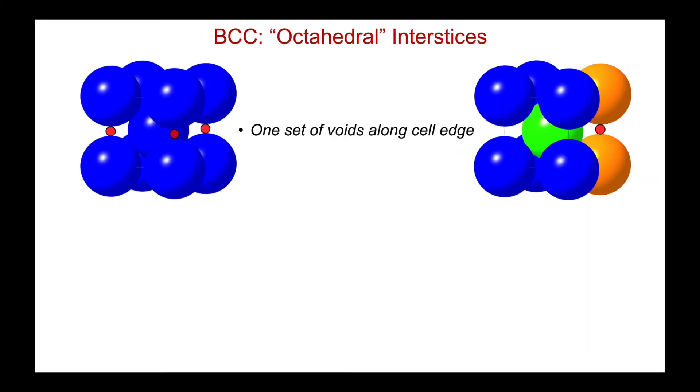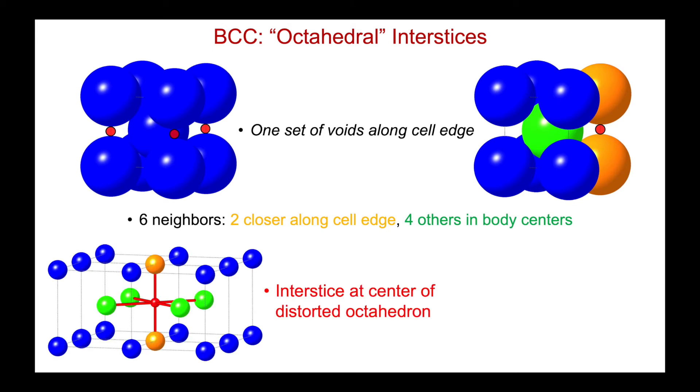Let's take a look at those set of voids that are along the cell edge noted here. And we're going to see that they have six neighbors. Two are closer along the cell edge, these orange atoms. The other four nearest neighbors are the atoms here in the body centers. They're actually further away. And so if I draw multiple unit cells of the BCC structure, we can see here is my interstice. Above and below are two of its nearest neighbors. And here in the body centers are the other four.